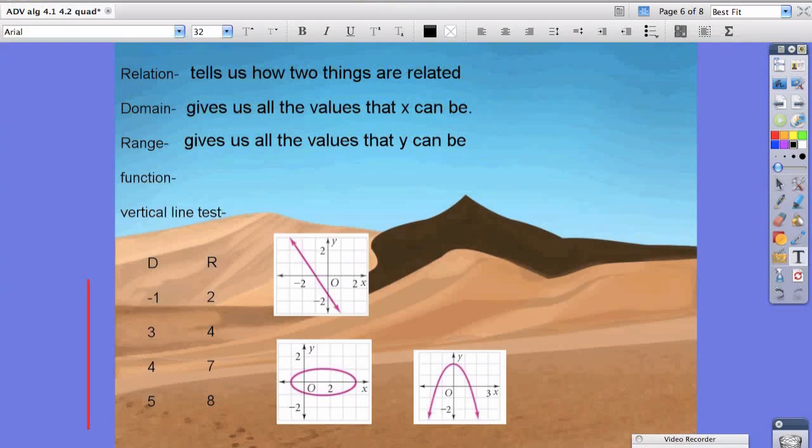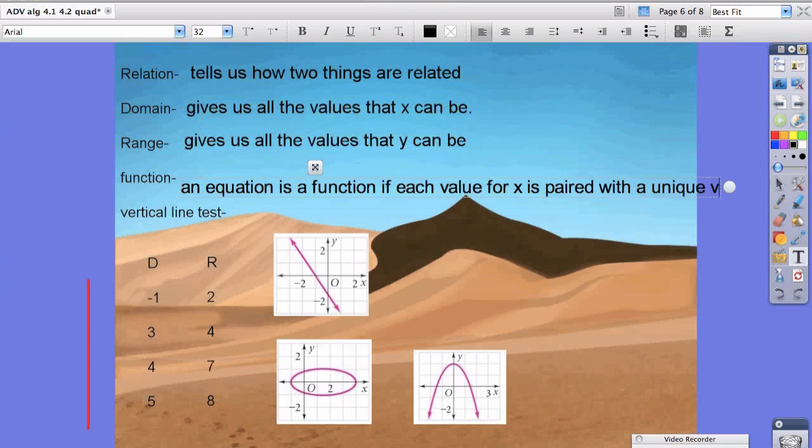Now a function is a little bit more tricky of an explanation. A function tells us if a relation actually can function, where every value in the domain or every value in the x values is paired with exactly one value in the range or the y values. So the definition would be that an equation is a function if each value for x is paired with a unique value for y.